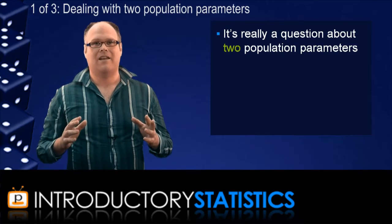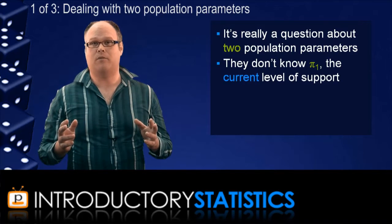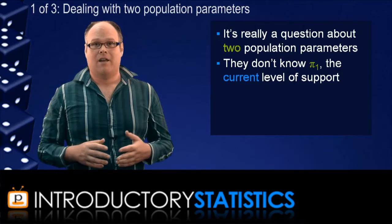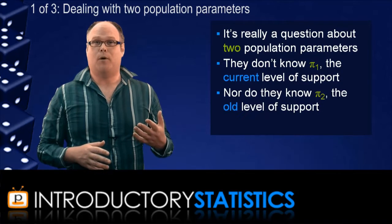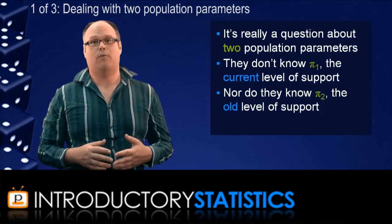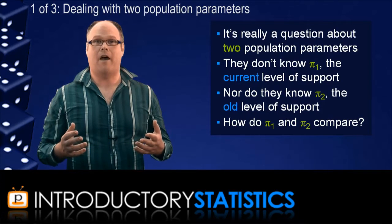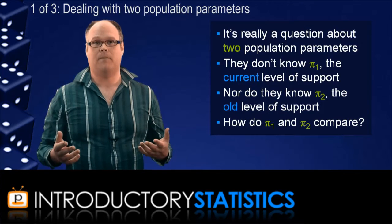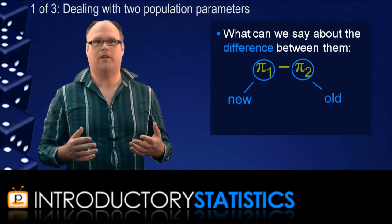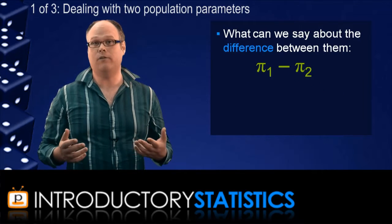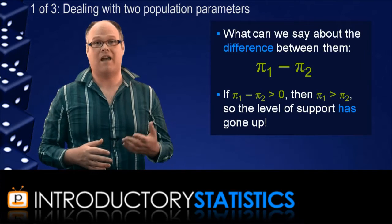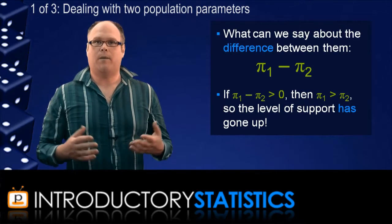But has the level of support in the true underlying population gone up? Answering that question will involve making an inference about not one, but two parameters. The council doesn't know the population proportion of people that support the bridge today — it only calculated a sample proportion. Similarly, it doesn't know the population proportion of support six months ago either. So there are two unknown parameters and we now want to draw a conclusion about how those parameters compare.